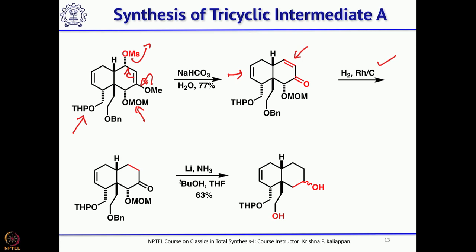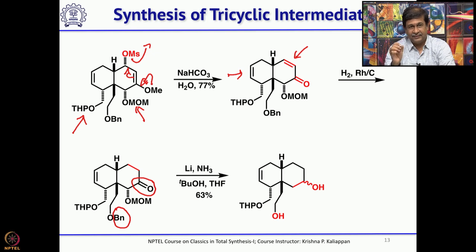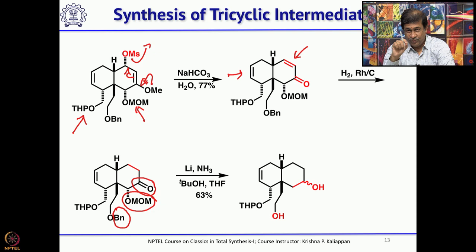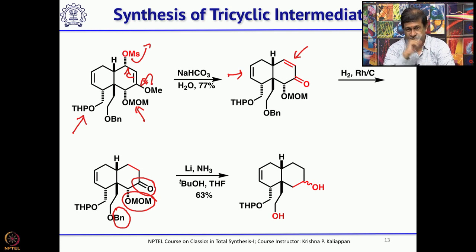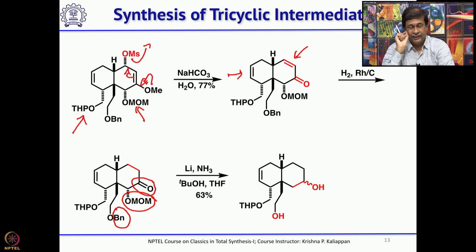Lithium in ammonia removes the benzyl group and also adds an electron to the carbonyl to form a ketyl radical. This eliminates the OMOM group, forming an enolate that becomes a ketone, which is then further reduced to the corresponding hydroxyl group. So lithium/ammonia does three things: removes the benzyl group, removes the MOM group via ketyl radical formation, and reduces the ketone to a hydroxyl. Oxidation of the diol with chromium trioxide/pyridine gives the corresponding keto-aldehyde.